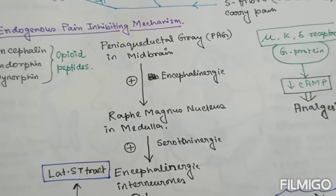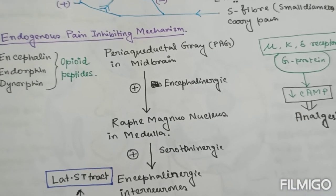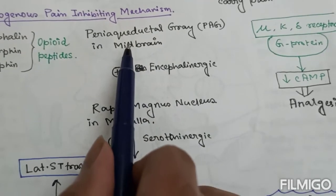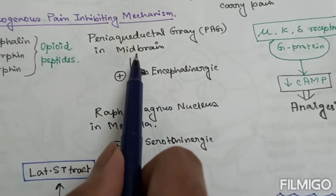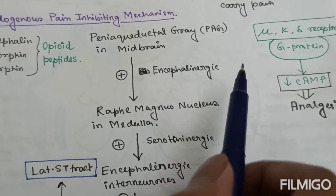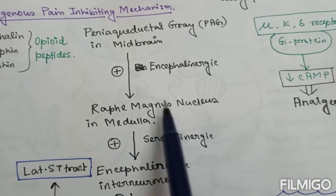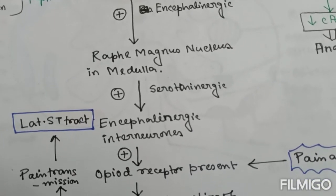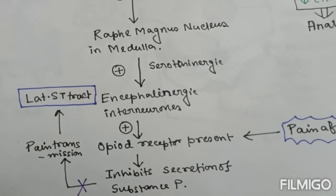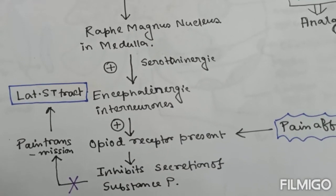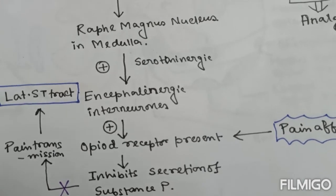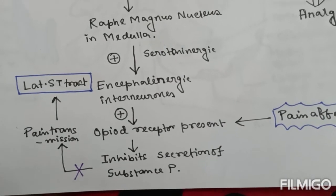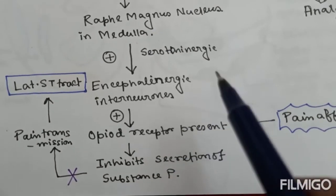The endogenous opioid peptides act at specific receptors present on the periaqueductal gray in the midbrain. From the PAG region, there emerge enkephalinergic neurons that reach the raphe magnus nucleus in the medulla. From the raphe magnus nucleus, serotonergic neurons arise after stimulation and they ultimately converge with enkephalinergic interneurons.